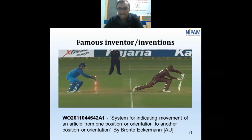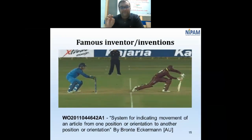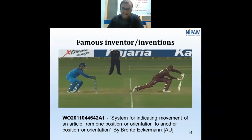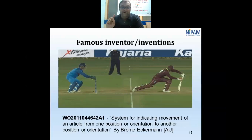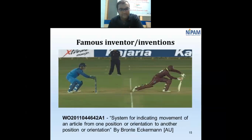For cricket lovers, the LED stumps are also a patented invention, invented by Australian inventor Bronte Eckermann and protected by patents in multiple countries. If the BCCI, ICC, or any cricket organizing body wishes to use this invention, they must obtain a license from the patentee. The licensing cost is approximately 25 lakhs per set of stumps for a particular match — demonstrating the immense power of intellectual property.